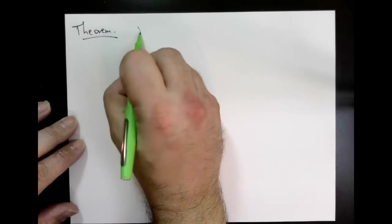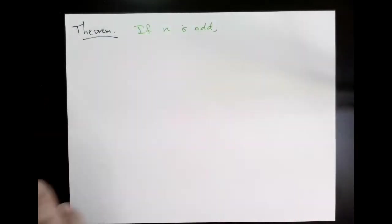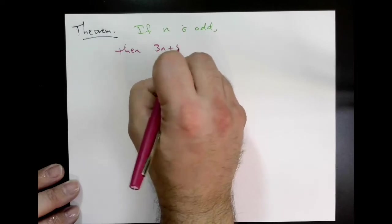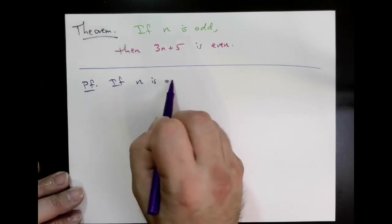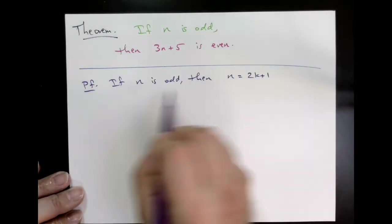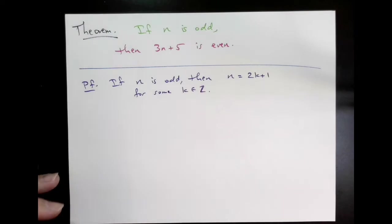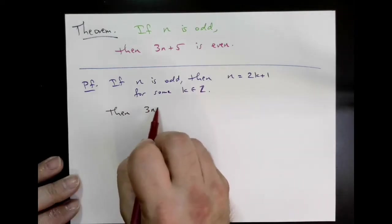If x is odd then 3x plus 5 is even. Okay so let's work this out. So by definition if x is odd then x equals 2k plus 1 for some integer k. Okay and then we just do some algebra. So 3x plus 5 you plug in 2k plus 1 you get 6k plus 8.